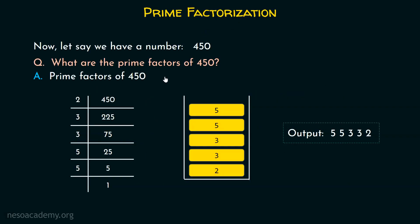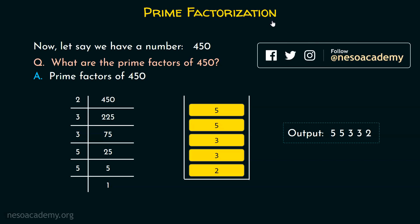Here you can see that we are interested in finding the prime factors of this given number, 450. These are all the prime factors of this number and we have found out all these prime factors with the help of the prime factorization technique. We have learned this in the previous presentation. If you haven't watched the previous lecture, then I would recommend you to watch that lecture before moving on to this lecture.